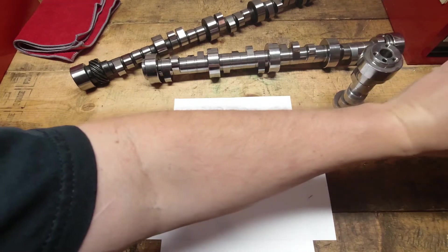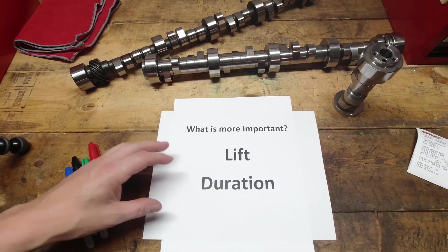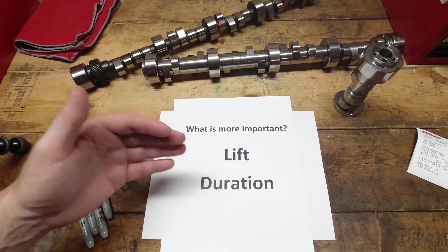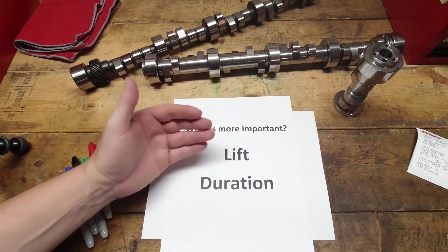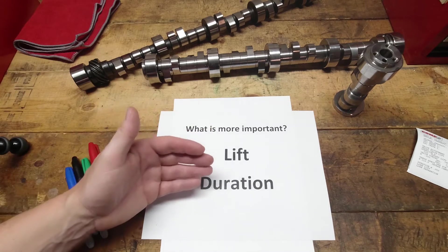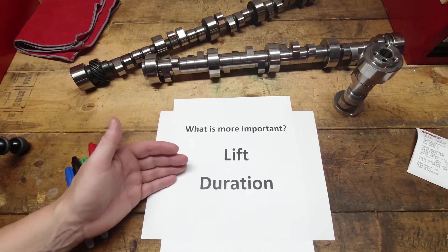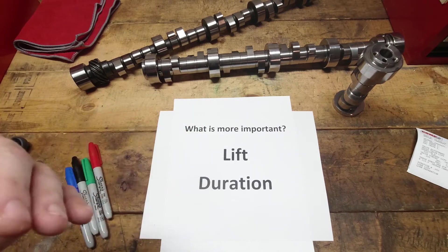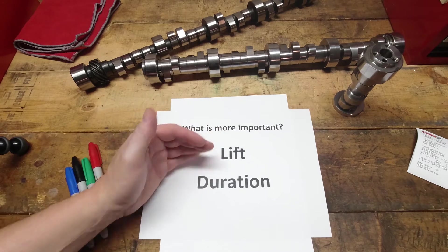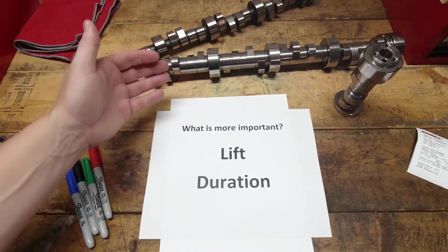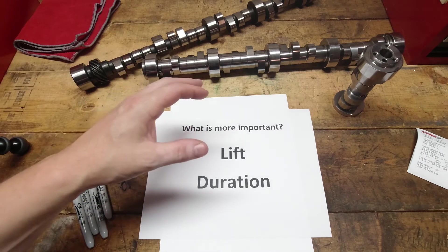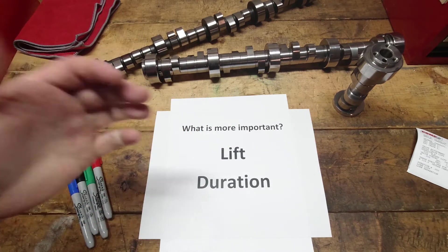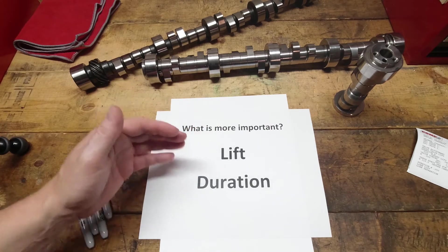But when it comes to what's more important, and I see this discussed quite a bit and talked about quite a bit, it seems like the lift number is always the first thing that people talk about. And when you're selecting a camshaft, it's something to consider. But is it the most important aspect of a camshaft? Will it give you the best information, the best performance? Is it the most critical number? Now, we're not going to talk about LSA centerline, none of those things. I just want to talk about these two things. Let's just talk about which one's more important.